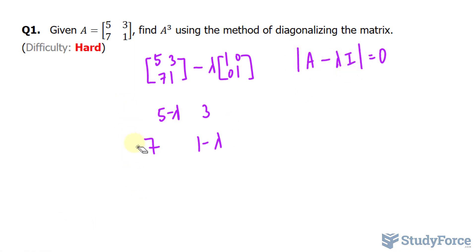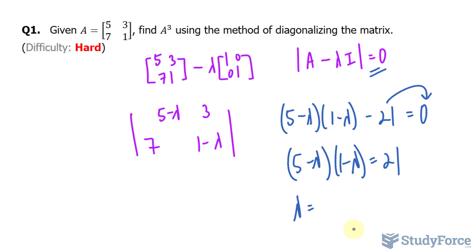To find the determinant of a 2 by 2 matrix is not that bad. We multiply this diagonal, the elements in this diagonal, and we get the following. And we subtract it by the product of that diagonal, which is 21. Set that equal to 0, because this is equal to 0. Bring that over. We have a quadratic. And if you solve the following equation, you should end up with two values of lambda, namely 8 and negative 2.